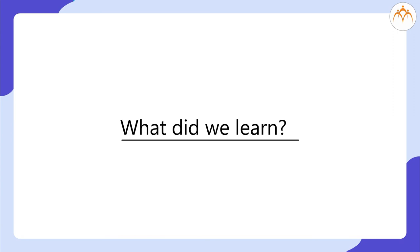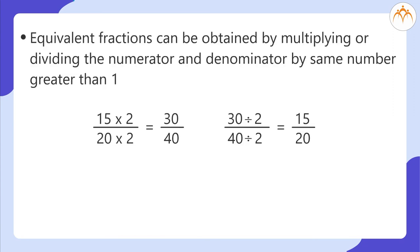What did we learn? Equivalent fractions can be obtained by multiplying or dividing the numerator and denominator by the same number greater than 1. For example, 15 multiplied by 2, by 20 multiplied by 2, equals 30 by 40 — by multiplying. And 30 divided by 2, by 40 divided by 2, equals 15 by 20 — by dividing.